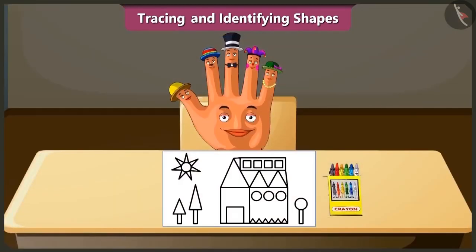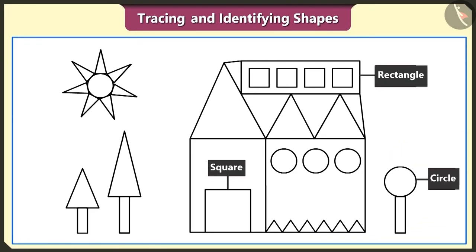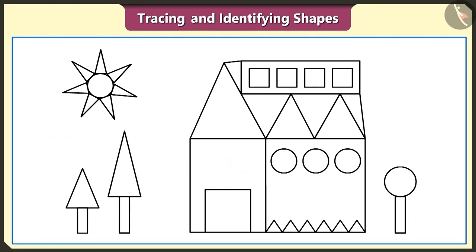Friends, let's see the second example now. Look, this is a figure made by tracing square, rectangle, circle and triangle shapes. Let's fill this figure with colors. First of all, we will fill all the triangles with yellow color. Now, we will fill in all the circles with red color.